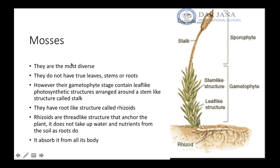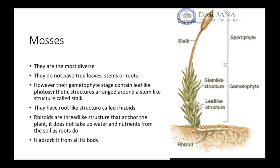We will start by talking about the first type of bryophytes, which is the mosses. Mosses are the most diverse. They do not have leaves, stems, or roots — instead they have leaf-like, stem-like, and root-like structures.